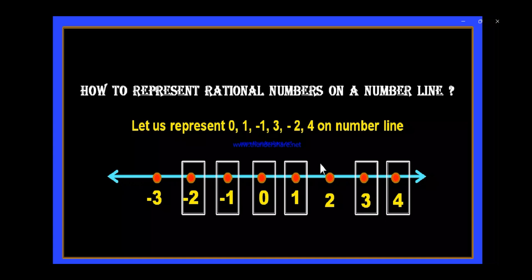Now the required numbers are represented on the number line. The given numbers 0, 1, minus 1, 3, minus 2, and 4 are all represented on the number line, and you can find these numbers on it.